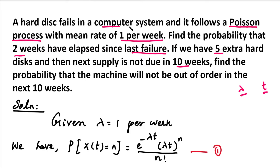In this computer system, the average is 1 hard disk failure per week. That is, the mean rate is 1 per week. So the value of lambda is 1.